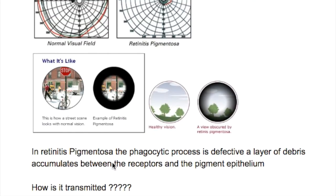In retinitis pigmentosa, the phagocytic process is defective. A layer of debris accumulates between the receptors and the pigment epithelium.